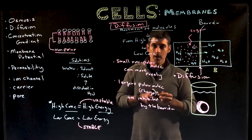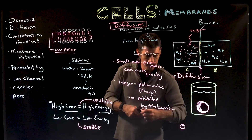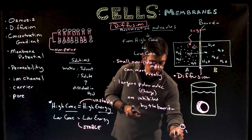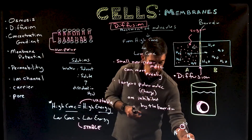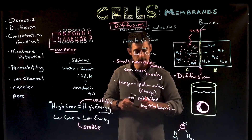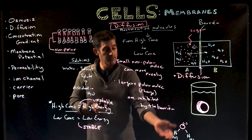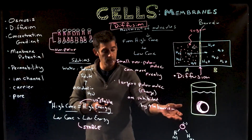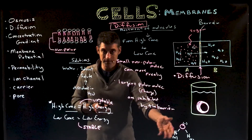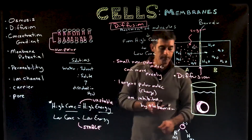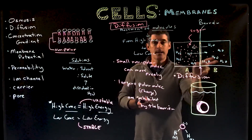Water molecules are smaller — an oxygen and two hydrogens. The oxygen carries a partial negative charge and the hydrogens carry partial positive charges, making water polar. But they're small, and water molecules can tend to move freely from one side of the membrane to another.